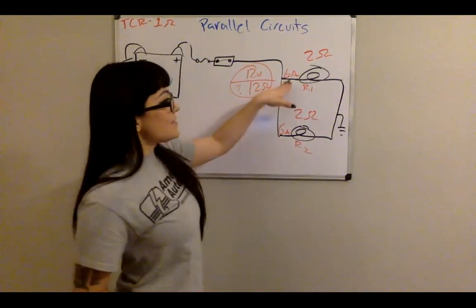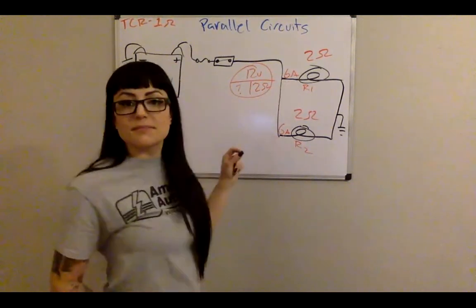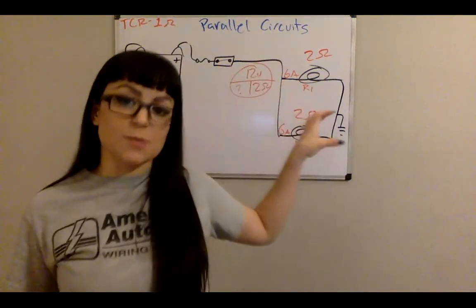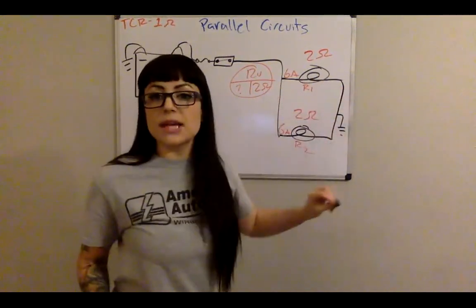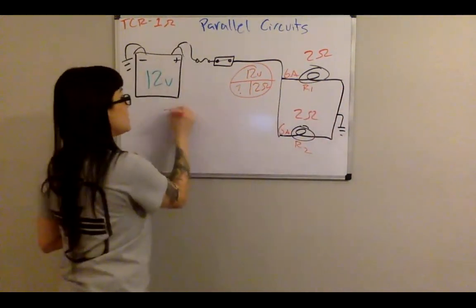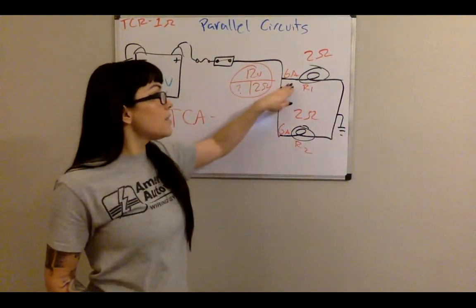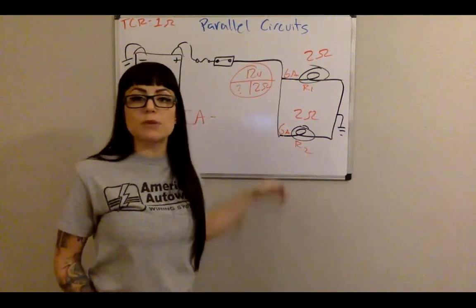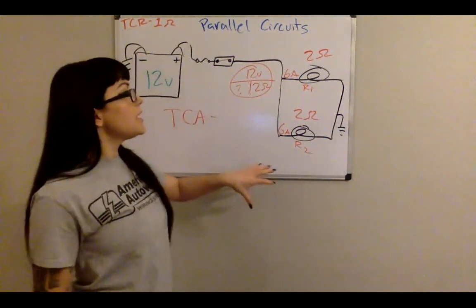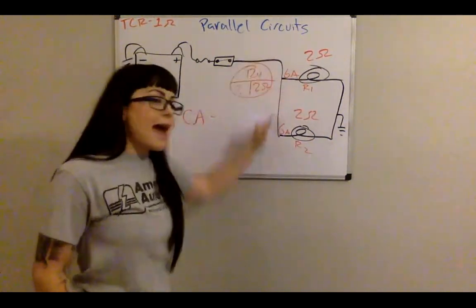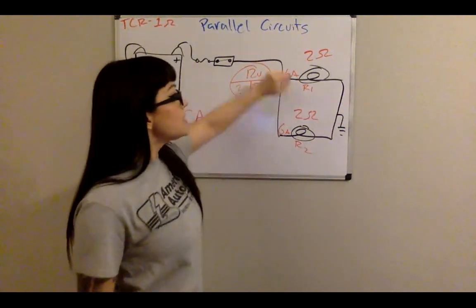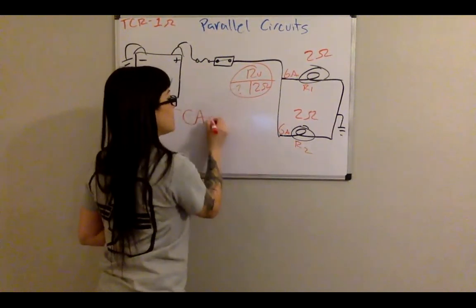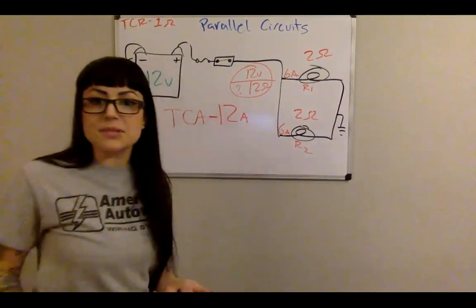Now pretend this branch doesn't exist and do the same math for the other: 12 volts divided by 2 ohms gives me 6 amps in this branch as well. With the hand method we solve for amperage first. To find TCA, add up the branch amperage values. Six amps plus 6 amps gives a total circuit amperage. Remember: current coming out of the battery equals current coming back in — in between it splits, but at the end they combine. So TCA equals 12 amps.